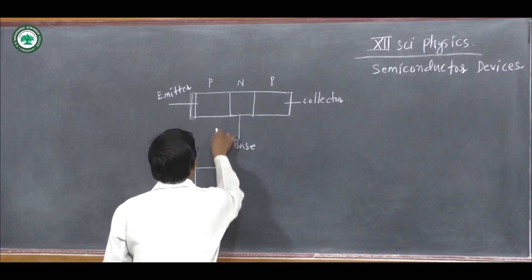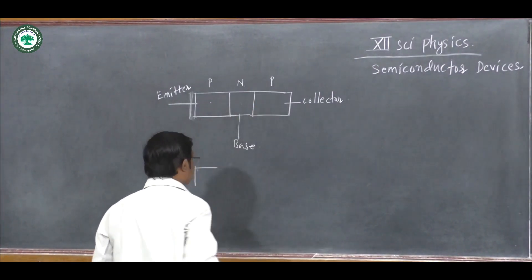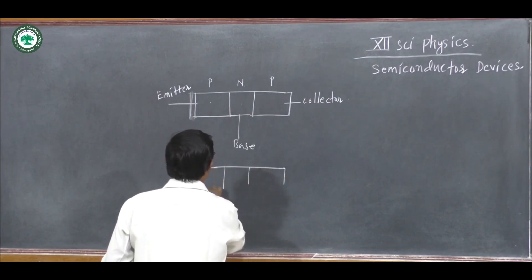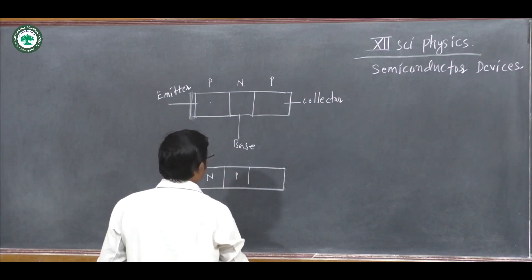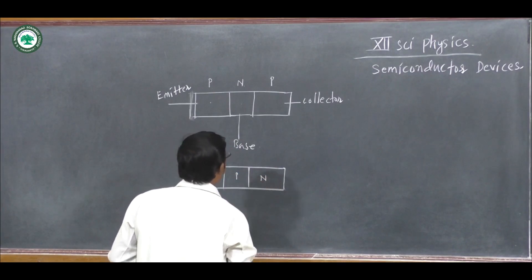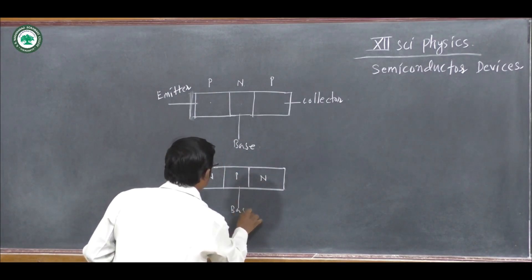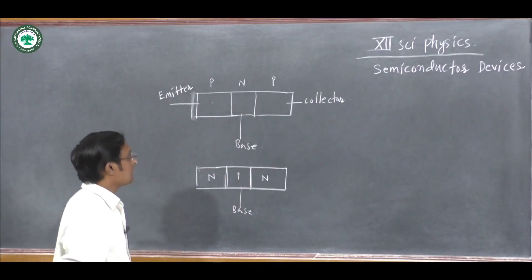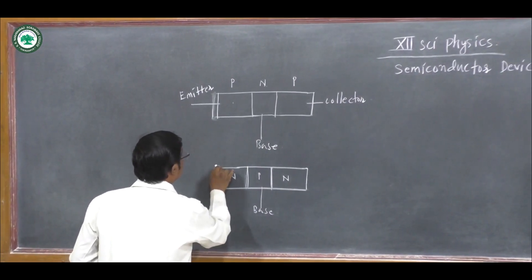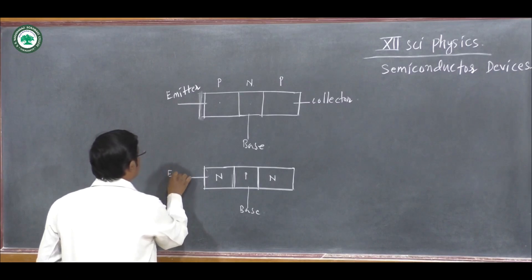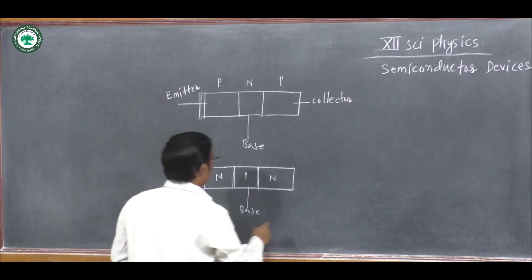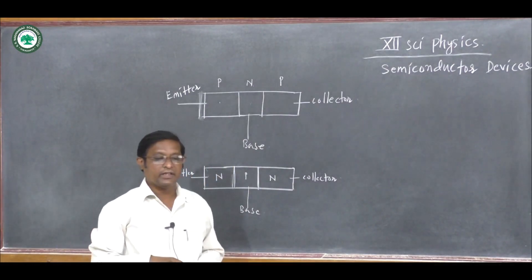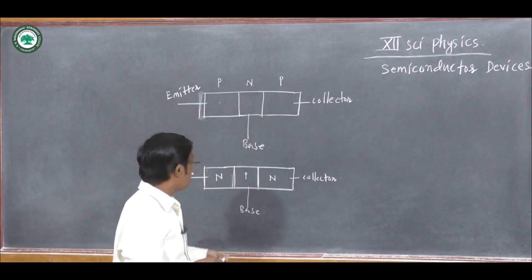One type is the PNP transistor — this one is the P region, this one is the N region, and this one is the P region. Another type is the NPN transistor where the P-type semiconductor is sandwiched between two N-type materials. The middle portion is the base, which is smaller in size and lightly doped compared to the emitter and collector. These are the two types of transistors: PNP and NPN.